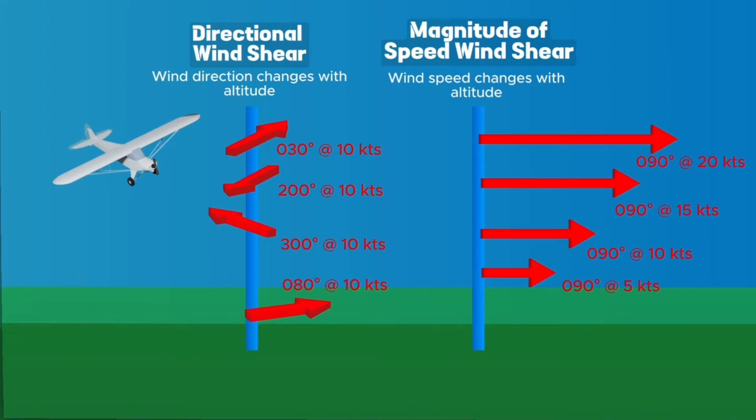Wind shear can occur at any altitude, even close to the surface where the difference between wind at the surface and wind at 3,000 or 5,000 feet is due to friction of the air moving over the surface of the earth.